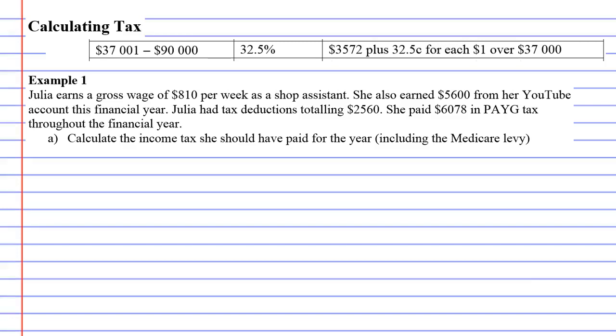We've only got one example that we're going to use for calculating tax, but this does take a long time. Example one says Julia earns a gross wage of eight hundred and ten dollars per week as a shop assistant. She also earned five thousand six hundred dollars from her YouTube account this financial year, and she's also had some tax deductions and paid some tax.